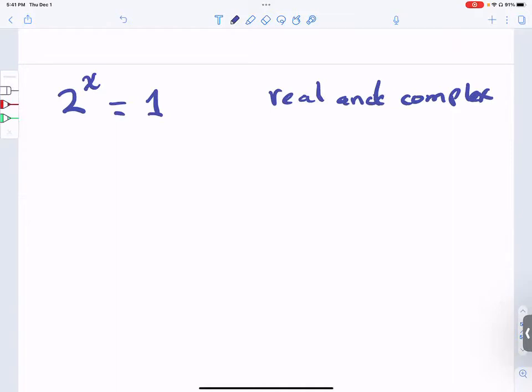Let's write the equation in base e. 2 to the x power is e to the x ln of 2, and 1 is e to the ln of 1.